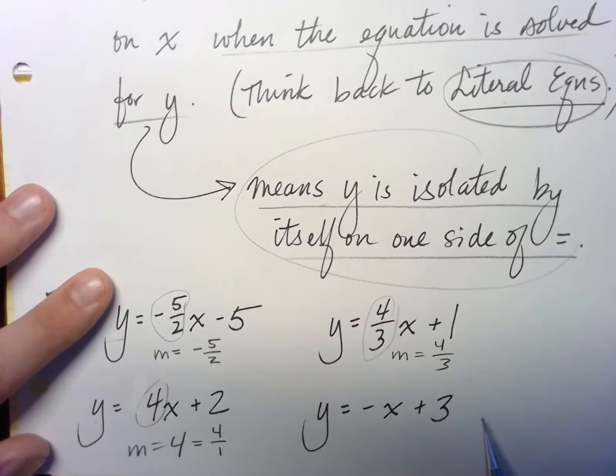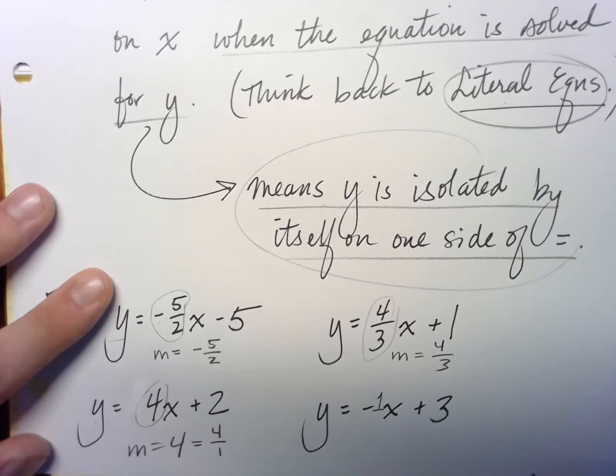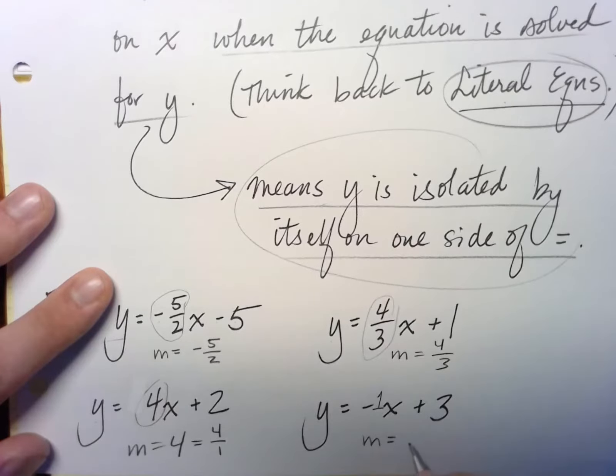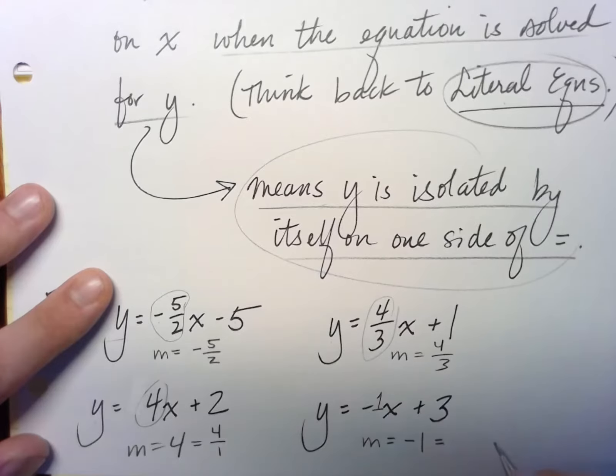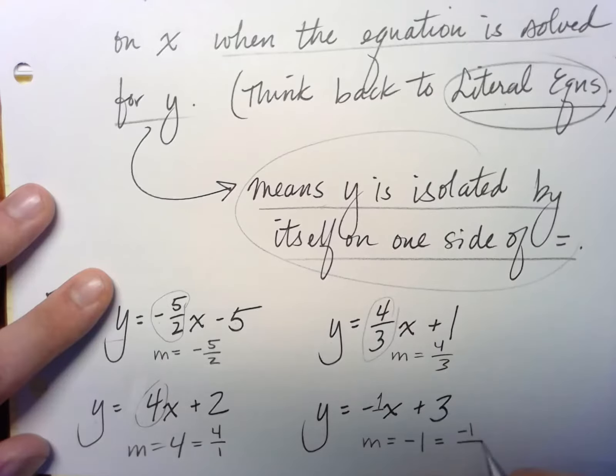This one is also in slope-intercept form, even though you don't see a number here, because what does this negative x plus 3 mean? Well, that means negative 1x plus 3. So here, m is negative 1, which could also be thought of as negative 1 over 1.